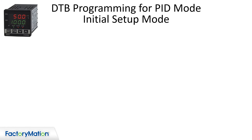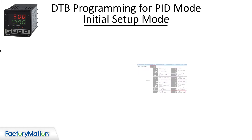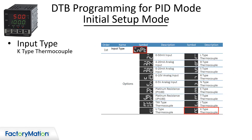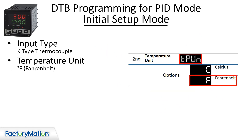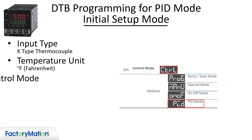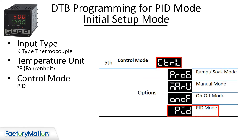To program the DTB for PID control, go to the initial setup mode. Set the input for K-type thermocouple. Set the temperature units to Fahrenheit. Set the control mode to PID.